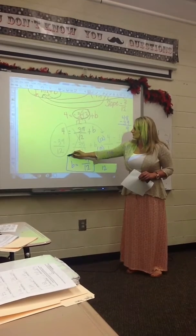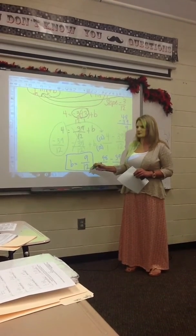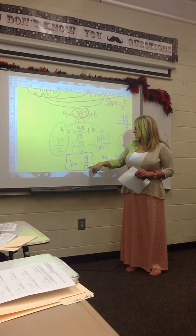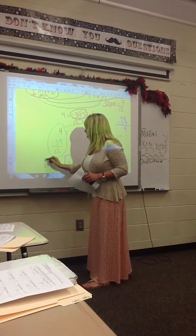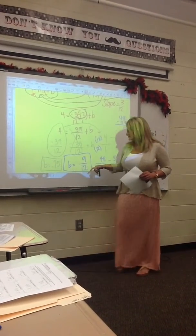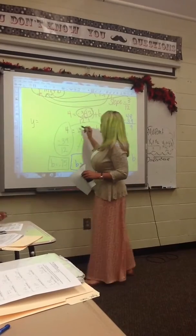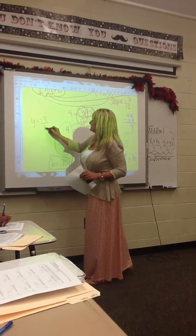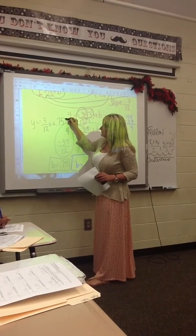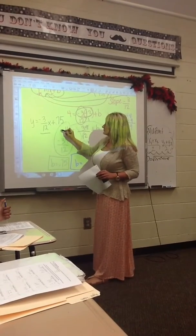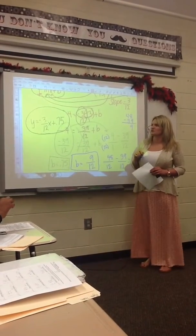Since this is your slope-intercept form and b is your y-intercept, you don't want to leave this as a fraction. So you have to convert it to a decimal because it's going to be on your y-intercept. So 9 divided by 12 is going to give you 0.75. Then you are going to put this into your equation, where our slope was negative 3/12 x and our y-intercept is positive 0.75. So I'm just plugging in my slope and my y-intercept, and this is the equation you get when you plug it into slope-intercept form.